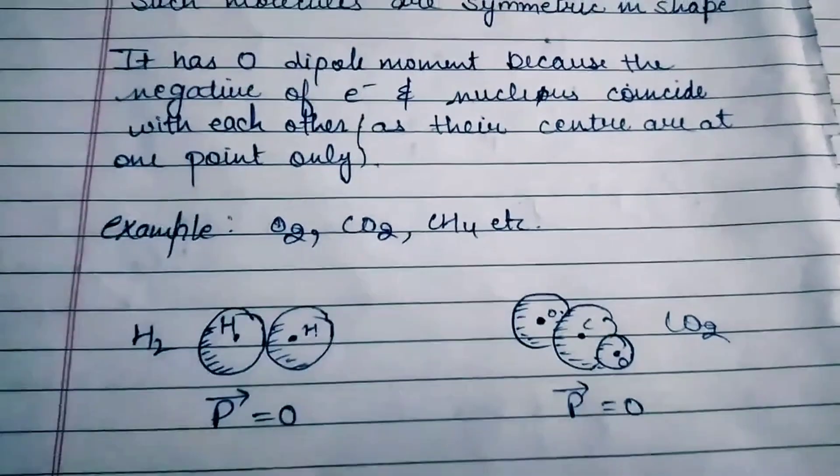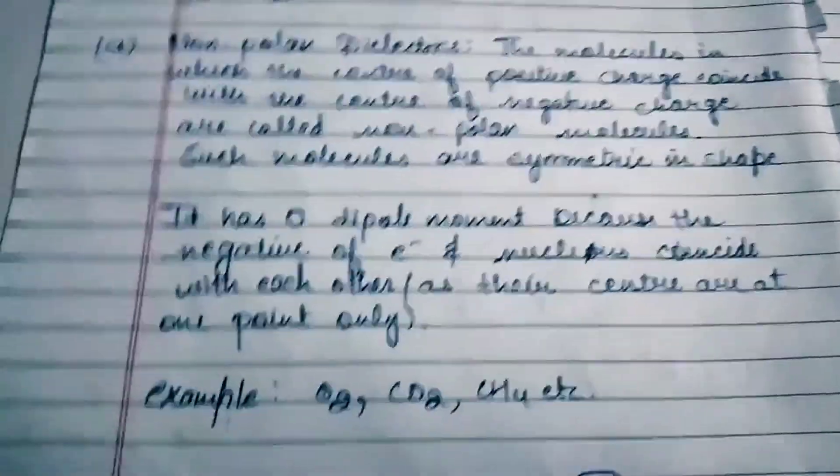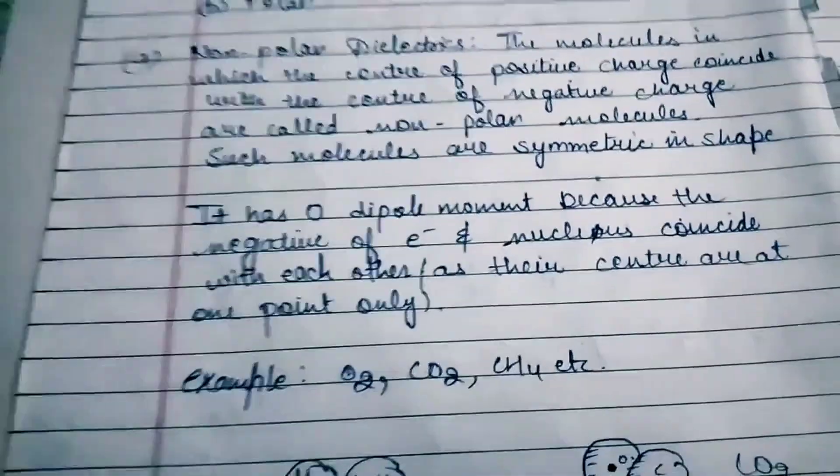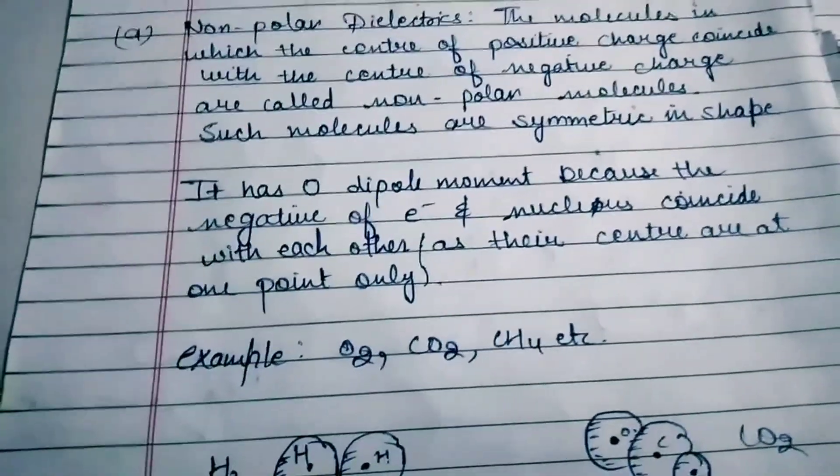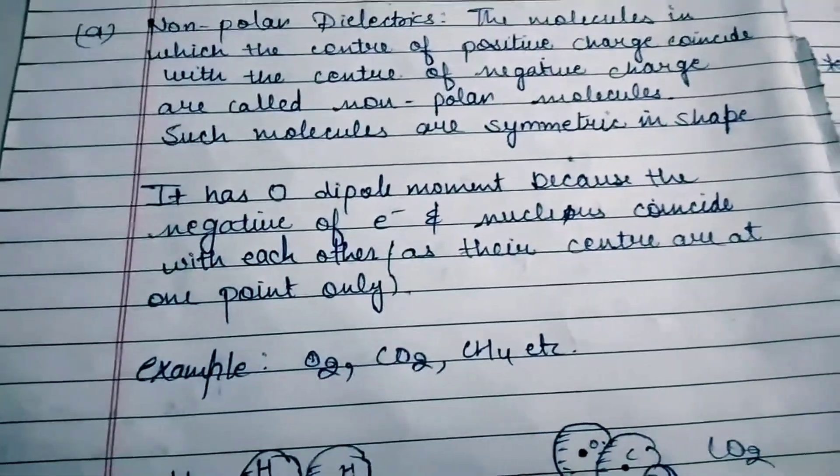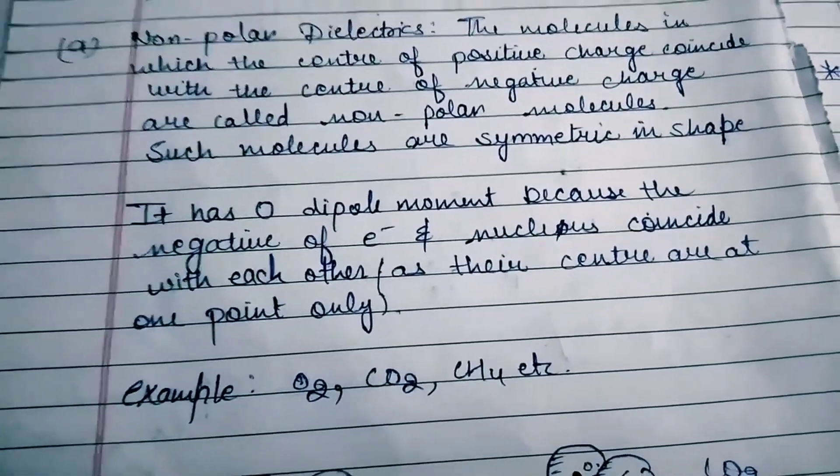Examples include oxygen, carbon dioxide, and methane. Polar means having plus and minus polarity, but in non-polar dielectrics there is no polarity, meaning zero dipole moment. There is no distance between the two charges.